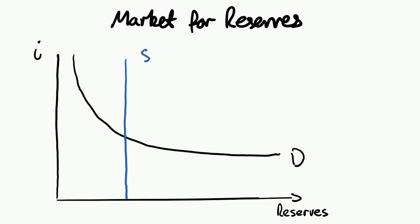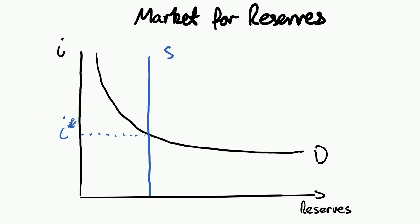The central bank tries to estimate the total demand for reserves on any given day and then sets the supply of reserves accordingly to achieve its target rate of interest, which we can call I*. Now if the central bank wishes to change the interest rate, all it needs to do is alter the supply of reserves. Let's say the central bank decides it wishes to lower the interest rate in the interbank market — what it will do is increase its supply of reserves by buying securities off banks and paying them by crediting them reserves at the central bank, which they simply do by printing money.